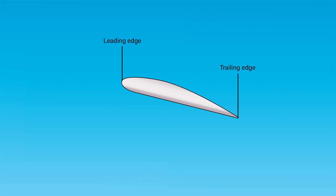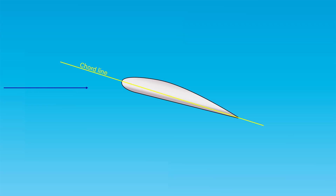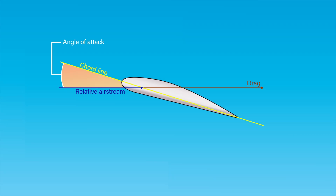Before beginning the discussion on AOA and its effect on airfoils, consider the terms chord and center of pressure. The chord of an airfoil or wing section is an imaginary straight line that passes through the section from the leading edge to the trailing edge. The chord line provides one side of an angle that ultimately forms the AOA, and the other side is formed by a line indicating the direction of the relative airstream. Thus, AOA is defined as the angle between the chord line of the wing and the direction of the relative wind — not to be confused with the angle of incidence, which is the angle between the chord line and the longitudinal axis of the aircraft.